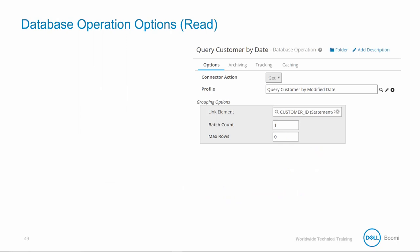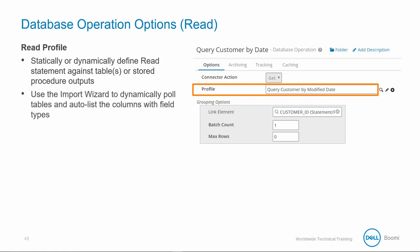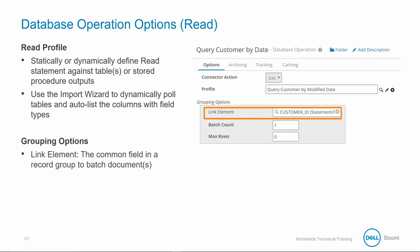The goal for the first part of our Daily Customer Wins process is to query the database to see if there are any updated records. To do this, we need to designate the start shape as our database connector and configure the database operation. The database operation can be viewed as a container for your statement definition. The profile section allows you to statically or dynamically define read statements against tables or stored procedure outputs. You can use the import wizard to dynamically pull tables and auto-list the columns with field types. The operation also defines the grouping options, which ultimately determine how the SQL response records will be returned as one-to-many documents. The link element is an optional field which specifies the common column in a record group to batch into documents.